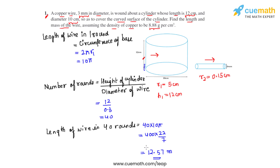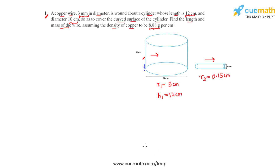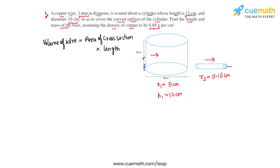Now we'll go on to the next part of the question where they're asking us to find the mass of the wire, assuming the density of copper to be 8.88 grams per centimeter cube. To calculate the mass of the wire, we first need to find the volume of the wire required to completely cover the curved surface area of the cylinder. The volume of the wire equals the area of cross-section of the wire times its length.